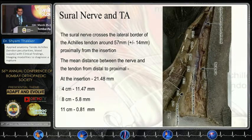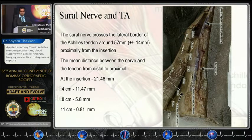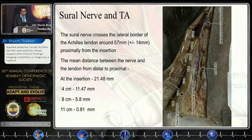Regarding the relationship with the sural nerve: the sural nerve crosses the Achilles tendon in the mid part and crosses over laterally. The approximate distance between the sural nerve and the Achilles tendon at the insertion is more than 2 cm; at 4 cm from the insertion it is around 11 mm, and as we go more proximally, the distance reduces. This is an important fact during percutaneous Achilles tendon repair.